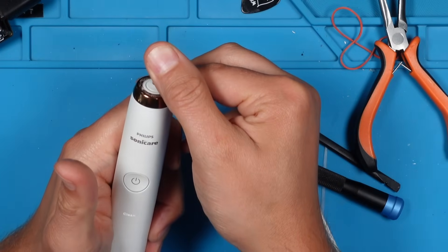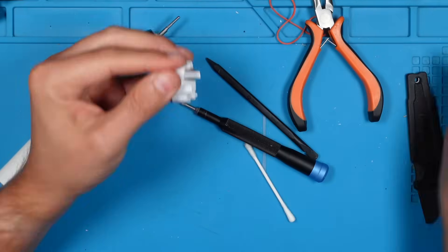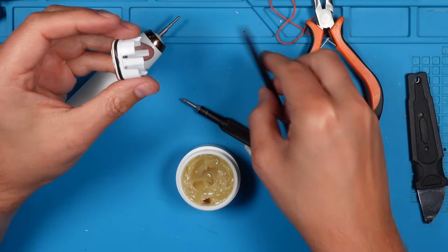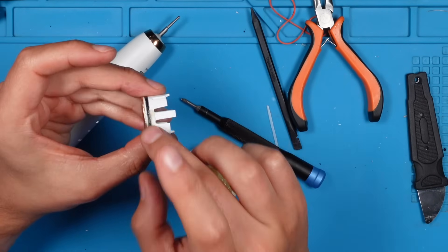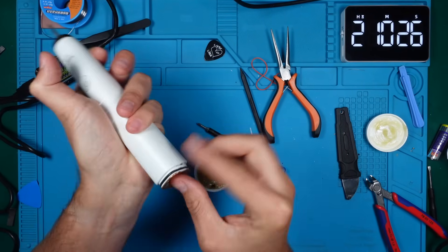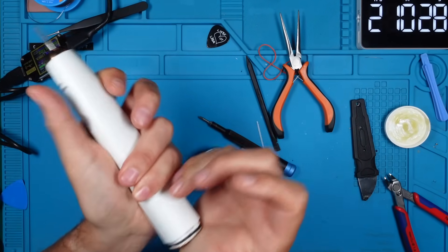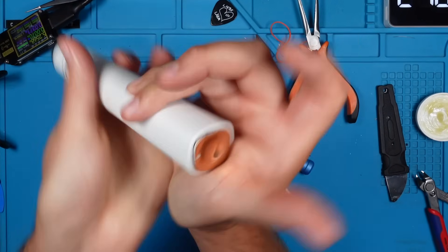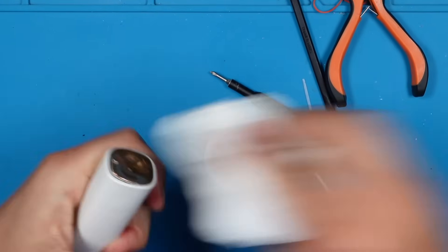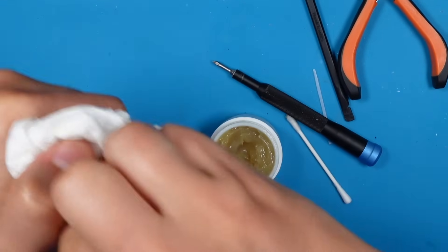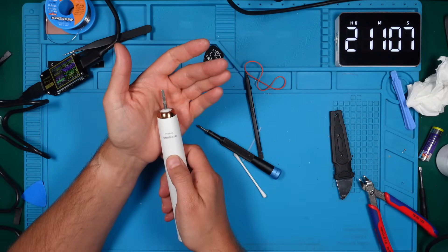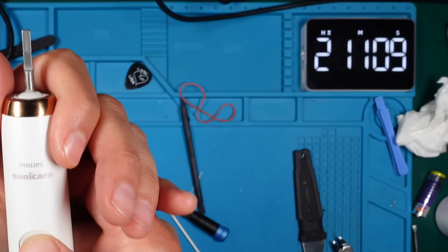It's much quieter now and it works without stopping. Let's lubricate the rubber seal of the bottom part with generic grease. Now we are going to insert it and push it down to seal it. This must be done with a good amount of force. Great! The toothbrush is fixed. This was quite a long repair.